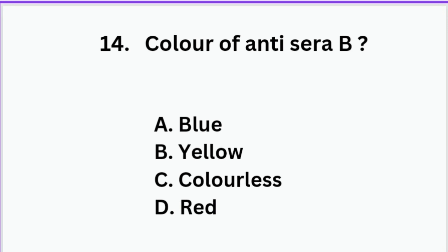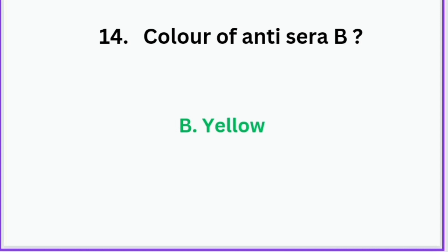Color of anti-serum B: Option A: Blue, Option B: Yellow, Option C: Colorless, Option D: Red. The correct answer is Option B — Yellow. Anti-serum B is yellow in color.